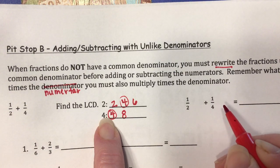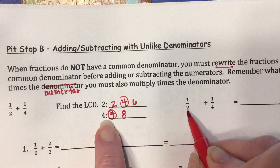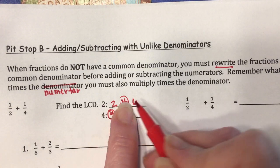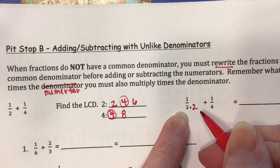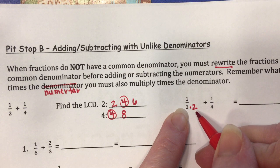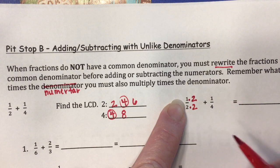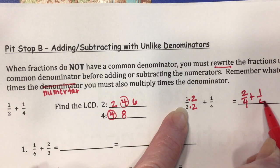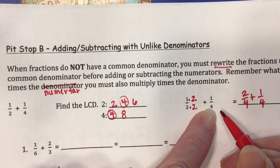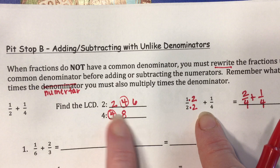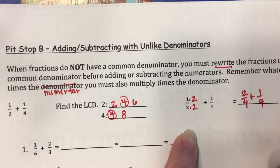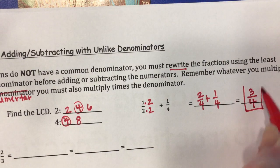This fraction already has four as the denominator so I don't have to change it. In order to change a two into a four, I multiply it by two. But if I multiply the denominator by two, I also have to multiply the numerator by two. So the new fraction is two-fourths plus one-fourth. Now they have the same denominator, so I add the numerators: two plus one is three, and I keep the denominator the same. The answer is three-fourths, which cannot be simplified.